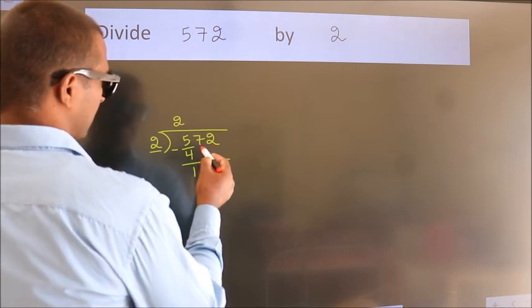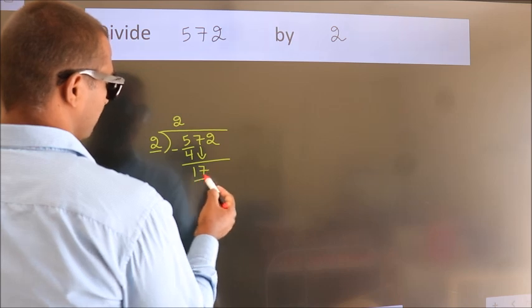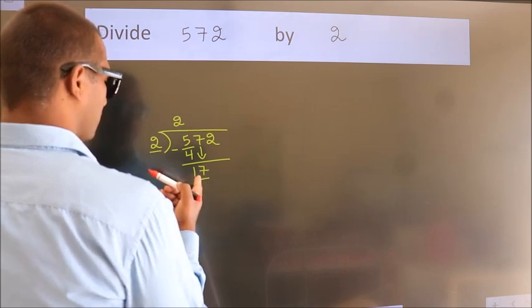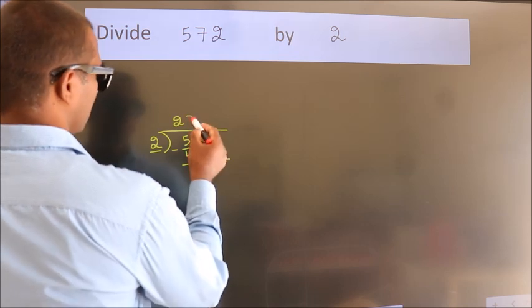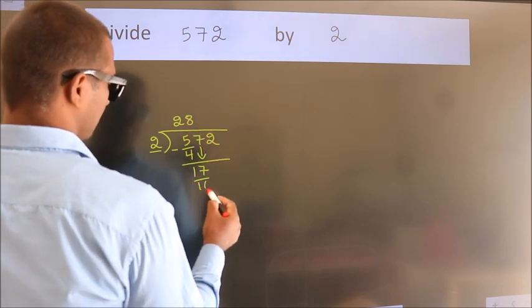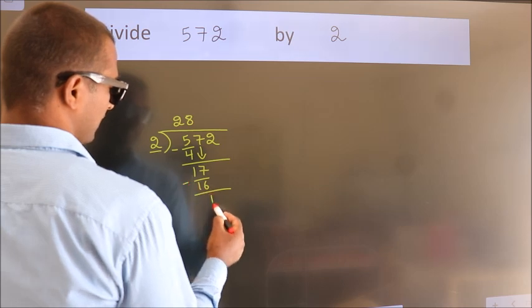After this, bring down the beside number. So 7 down, so 17. A number close to 17 in 2 table is 2 8s, 16. Now we subtract. We get 1.